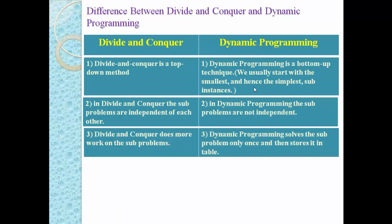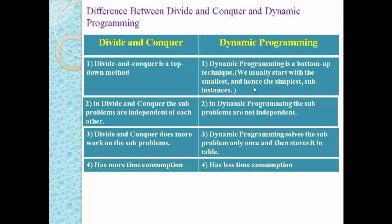In divide and conquer, more work is done on the subproblems — we apply an ad hoc algorithm to each subproblem and then merge their solutions to find the final solution. In dynamic programming, each subproblem is solved only once and then stored in the table. Divide and conquer has more time consumption, while dynamic programming has less time consumption.